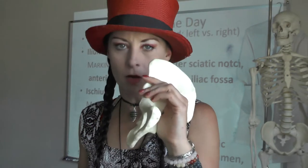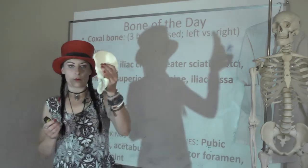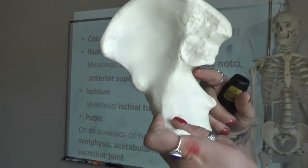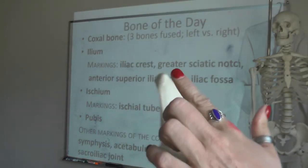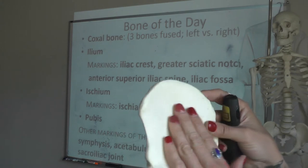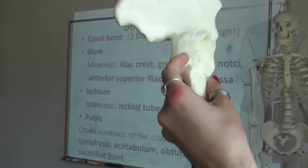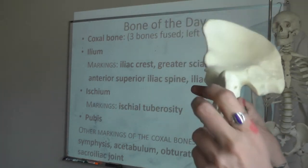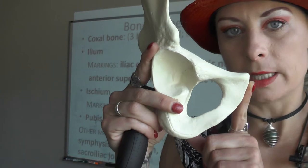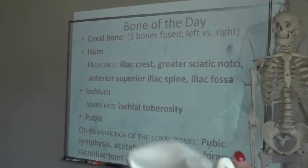What you're sitting on that feels like your butt bone is your ischial tuberosity. For bone markings of the ilium you need to know the iliac crest, the greater sciatic notch, the anterior superior iliac spine, and the iliac fossa. For the ischium you just need to know the ischial tuberosity, and for the pubis you just need to know it as the pubis of the oscoxa.